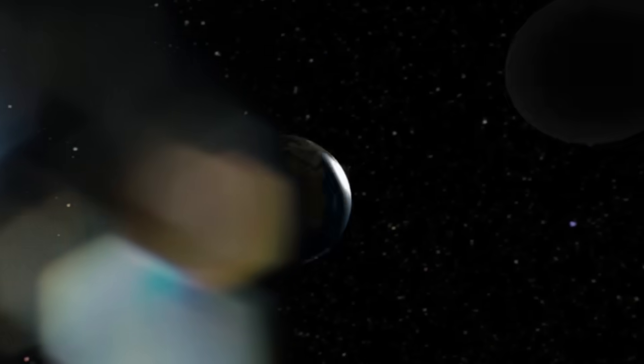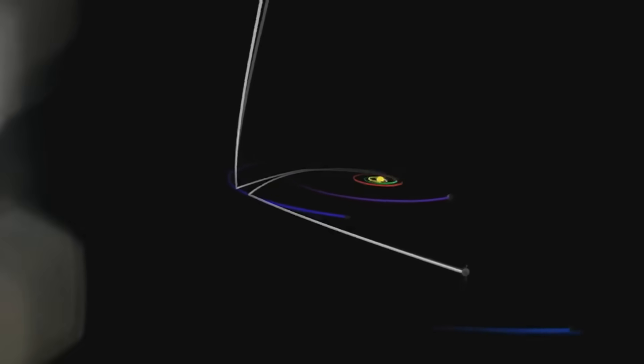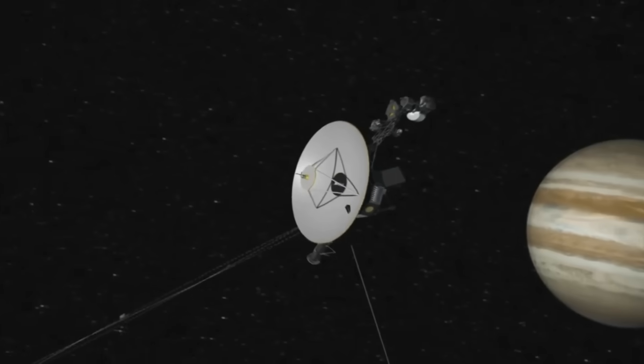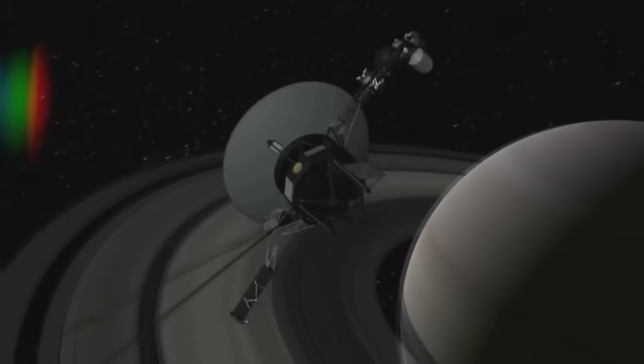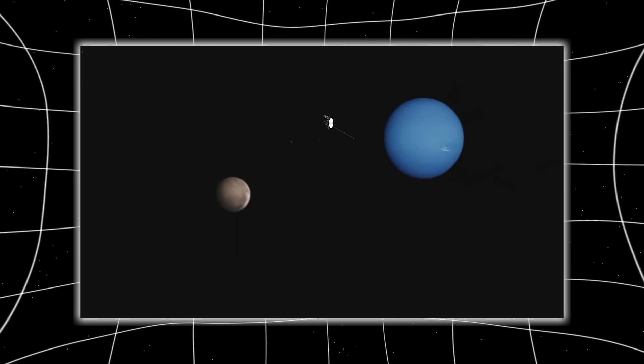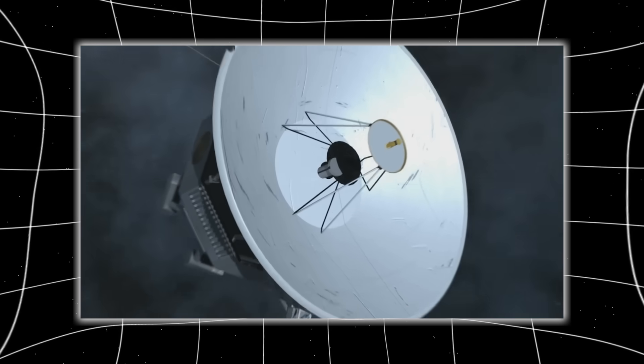During solar maximums, it expands, pushing the galactic environment away. During minimums, it contracts, exposing our system to more radiation. This dynamic behavior meant the boundary wasn't static. It was alive. And Voyager 2, approaching from a slightly different angle than Voyager 1, found that it crossed this frontier at a different distance, 121 AU instead of 119 AU.